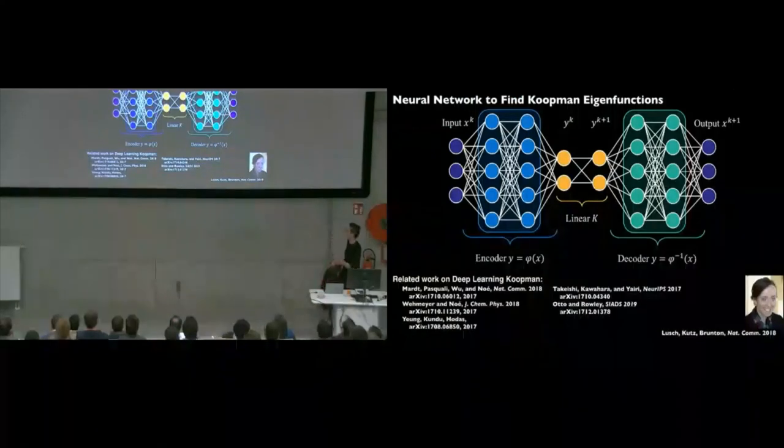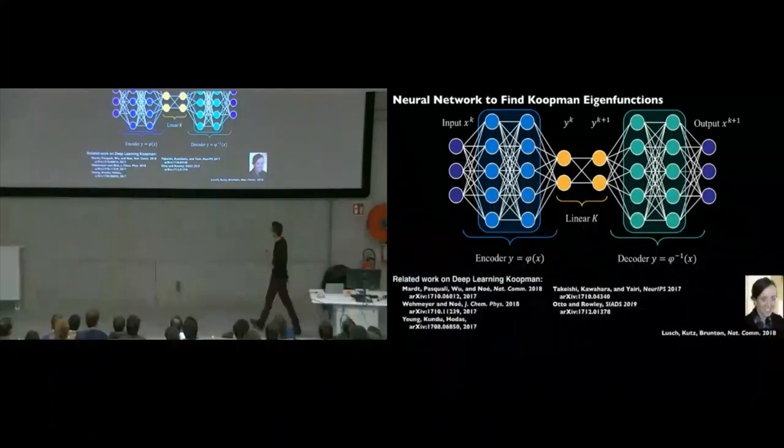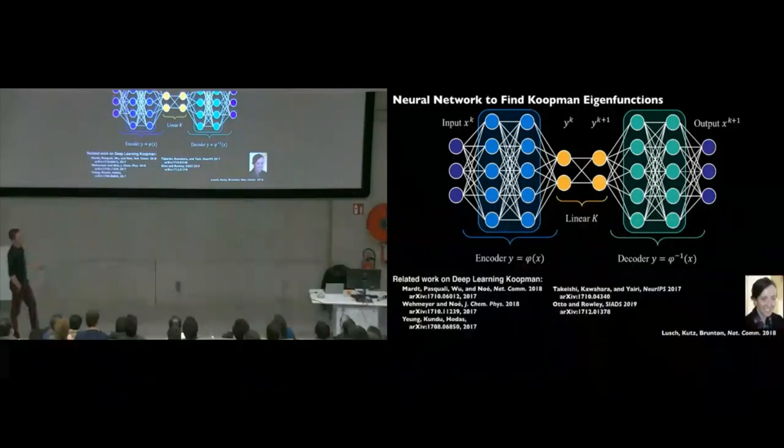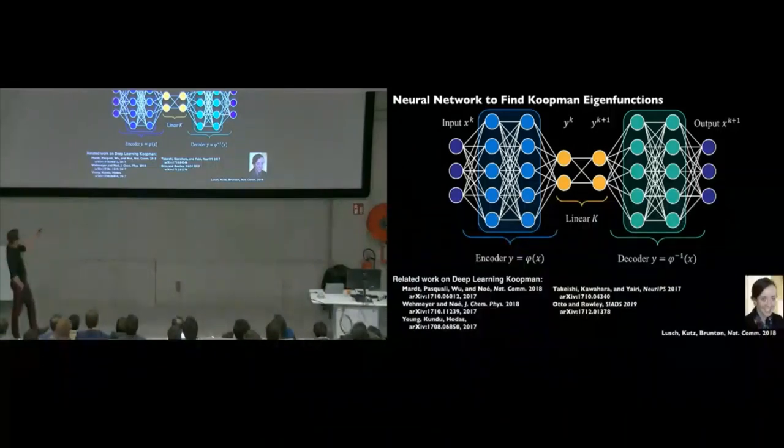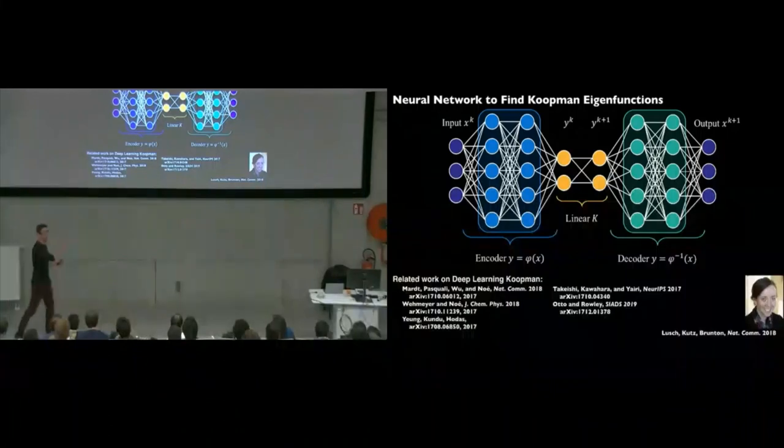Bethany, this is actually work that came before. This is Bethany Lush, who is now a scientist at Argonne Labs. This is when she was a postdoc with us. She built a deep autoencoder network to learn Koopman transformations, Koopman eigenfunctions. So you can basically build a coordinate transformation into a space where your nonlinear dynamics become linear. You can learn the coordinates and the linear Koopman model.